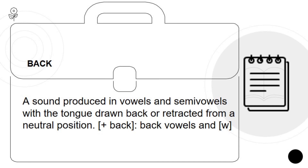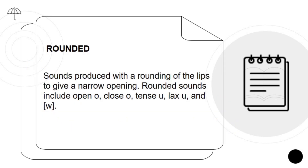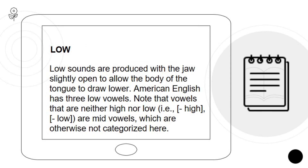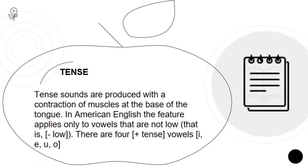Back: a sound produced in vowels and semivowels with the tongue drawn back or retracted from a neutral position. Rounded: sounds produced with a rounding of the lips to give a narrow opening. Low: low sounds are produced with the jaw slightly open to allow the body of the tongue to draw lower — American English has three low vowels. Note that vowels that are neither high nor low are mid-vowels, which are otherwise not categorized here. Tense: tense sounds are produced with a contraction of muscles at the base of the tongue; in American English, the feature applies only to vowels that are not low.